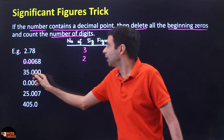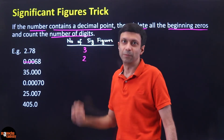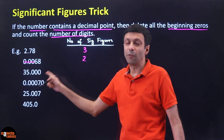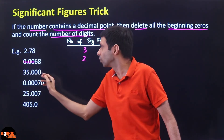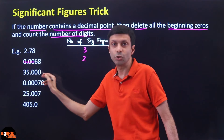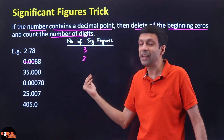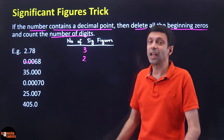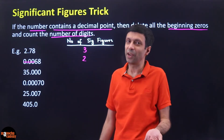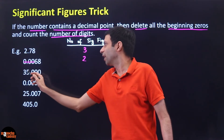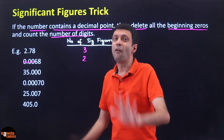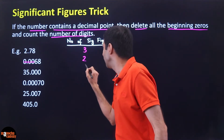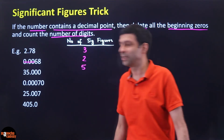Now if we have 35.000, again there is a decimal point. The rule says delete all the beginning zeros — but these are ending zeros, trailing zeros, so we can't delete them. That means all these digits are significant: 1, 2, 3, 4, 5 — five significant figures.